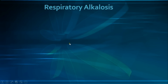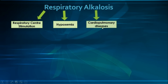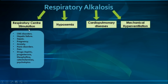Now let's start with the etiologies. We have four categories, with the first one being respiratory center stimulation, the second one being hypoxemia, the third being cardiopulmonary diseases, and the last one mechanical hyperventilation. Starting with respiratory center stimulation, we have a variety of causes, beginning with CNS disorders, which are thought to cause local irritation to the respiratory center in the brainstem.